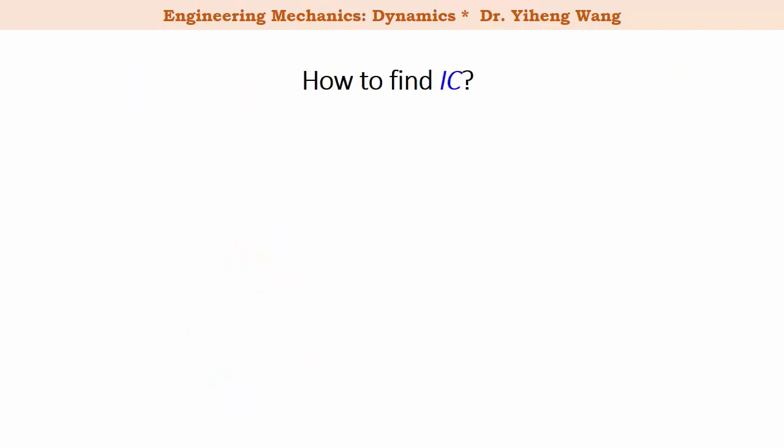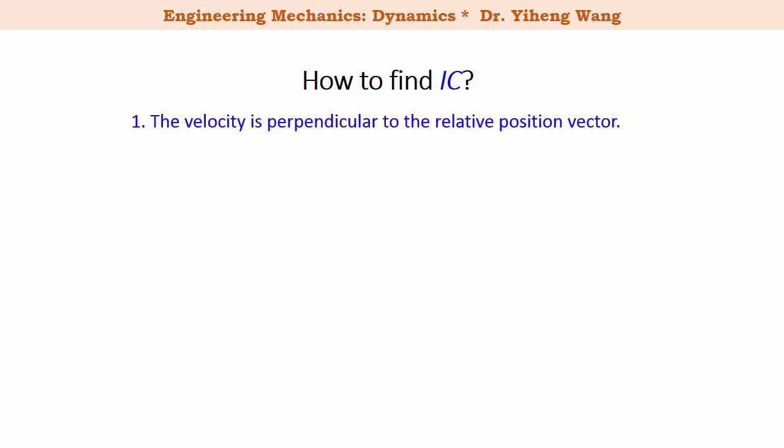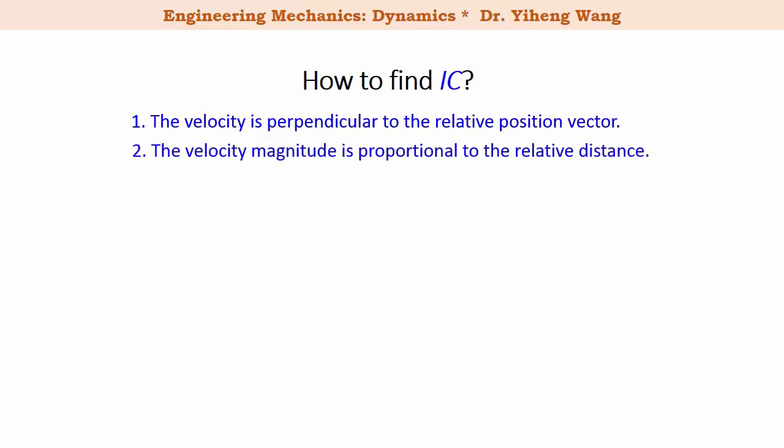But how do you find the instantaneous center of zero velocity when it is not so obvious? Well, there are two conditions that must be satisfied simultaneously. The first one is: the linear velocity vector of any point in this rigid body must be perpendicular to the relative position vector from the instantaneous center of zero velocity. Secondly, the velocity magnitude is proportional to the relative distance from the instantaneous center of zero velocity.